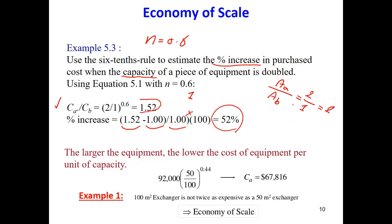That gives you 52 percent. So when we, for that equipment, for whatever equipment it is that I don't know, that the power is 0.6. If I double the capacity, the price will increase 52 percent.